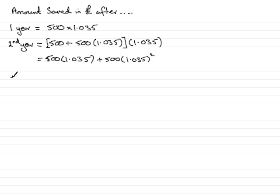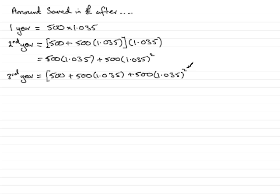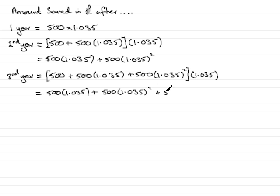Now we come to the third year. He puts in another 500 pounds, and that's added to the previous amount, giving his total at the beginning of the third year: 500 times 1.035, plus 500 times 1.035 squared. Throughout the year it accumulates 3.5% interest, so multiplying by 1.035 gives the final amount after three years: 500 times 1.035, plus 500 times 1.035 squared, plus 500 times 1.035 cubed.